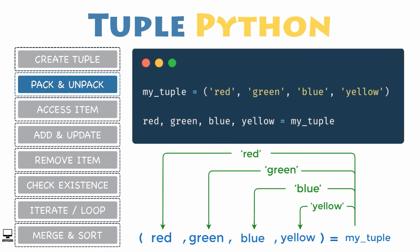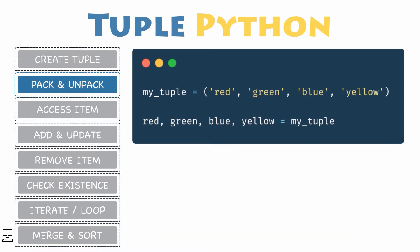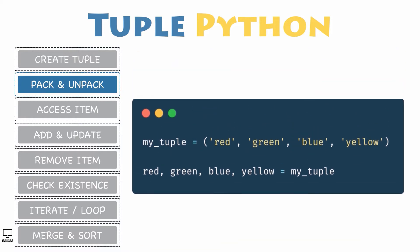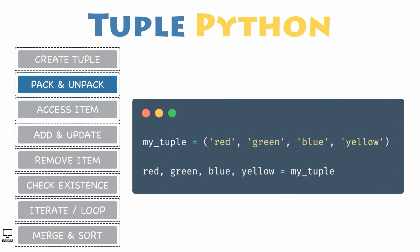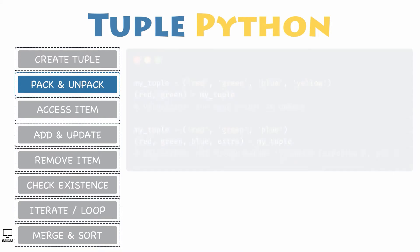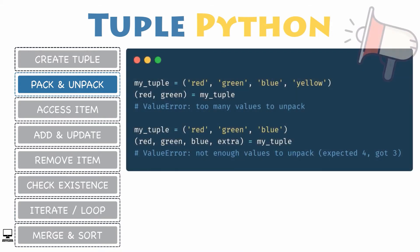When a packed tuple is then unpacked, the individual items are unpacked and assigned into the variables you defined. In this example, the tuple my_tuple is unpacked into the variables red, green, blue, and yellow so that you can access each one of them individually. When unpacking, the number of variables on the left must match the number of items in the tuple.